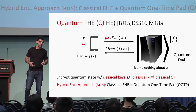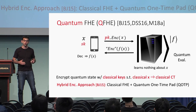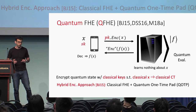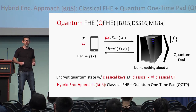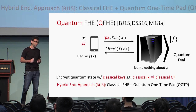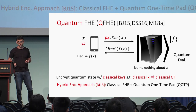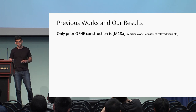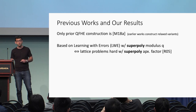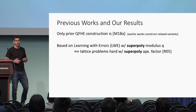Broadbent and Jeffrey didn't only present the concept but also presented an approach: they propose to combine classical fully homomorphic encryption with the quantum one-time pad to get quantum fully homomorphic encryption. This approach was used by all previous works. However, it seems pretty hard to actually apply this approach to get the full-fledged definition. The only prior work that achieves this definition is the very recent work of Mahadev, who constructed a scheme based on the hardness of the learning with errors problem but with a super-polynomial modulus q.